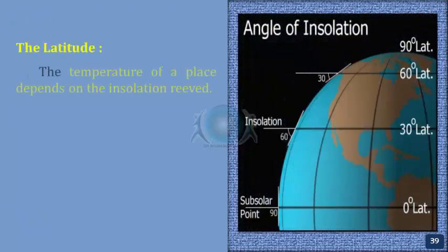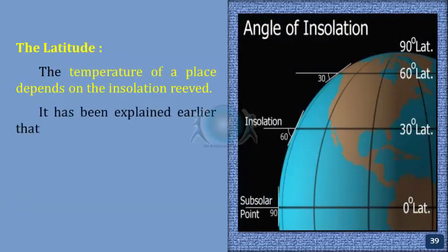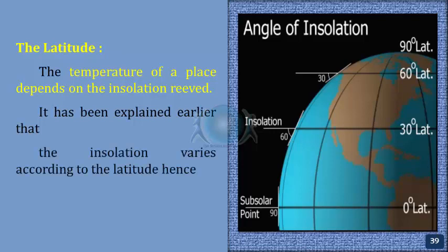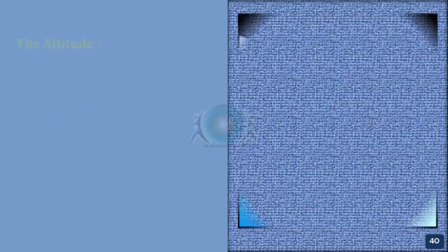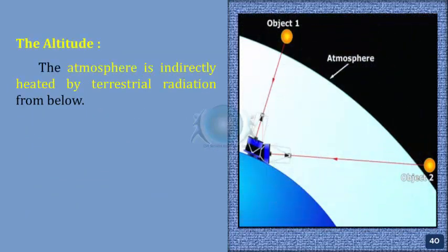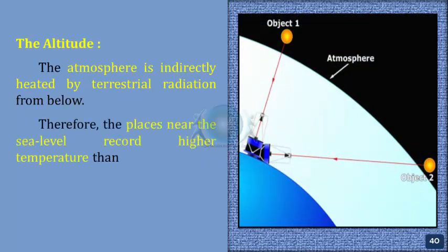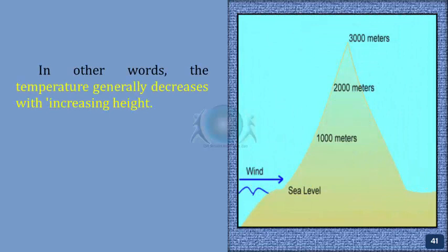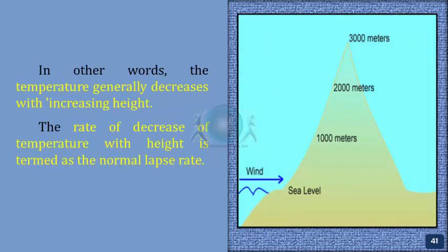The latitude — the temperature of a place depends on the insolation received. Insolation varies according to the latitude, hence temperature also varies accordingly. The altitude — the atmosphere is indirectly heated by terrestrial radiation from below. Therefore, places near sea level record higher temperatures than places situated at higher elevations. In other words, temperature generally decreases with increasing height. The rate of decrease of temperature with height is termed the normal lapse rate — it is 6.5 degrees centigrade per thousand meters.